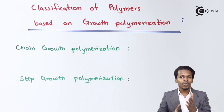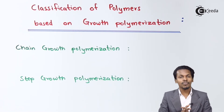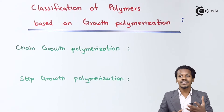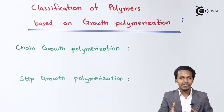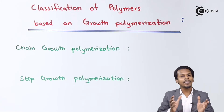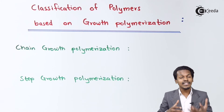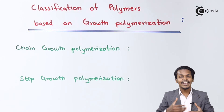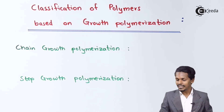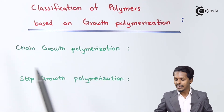Step growth polymerization is very similar to condensation polymers. The monomers in condensation polymerization have bifunctionality. When two monomers combine through condensation, they eliminate smaller molecules like water or methanol to form a product. This product also has bifunctionality, so the condensation process continues, and that is why it is called step growth polymerization.